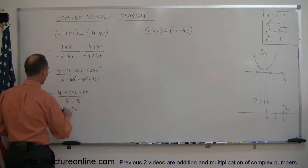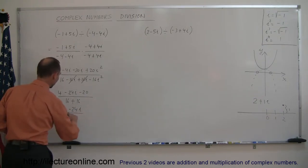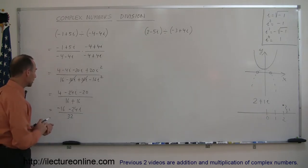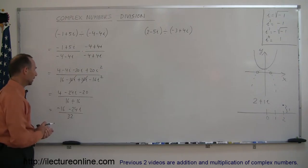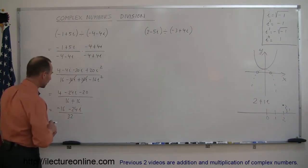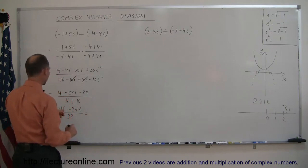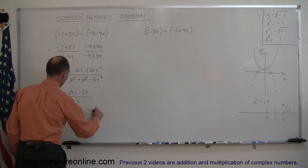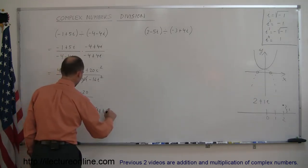So we have minus 16 minus 24i divided by 32. All we have to do is divide 32 into the real and imaginary parts of the numerator. But before we do that, we probably want to factor out whatever is common. So this can be written as — we can factor out a minus 4.